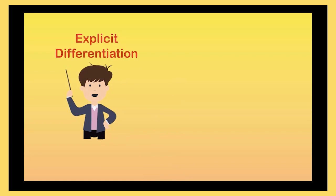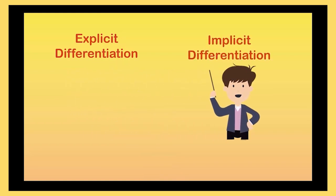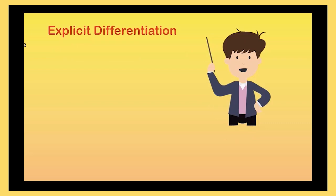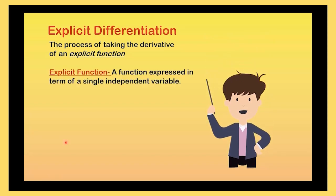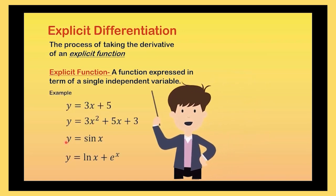Basically, you have two ways to differentiate a certain function. Number one is by explicit differentiation and by implicit differentiation. So what are the differences of those two? When you say explicit differentiation, that is the process of taking the derivative of an explicit function. And what is the explicit function? A function that is expressed in terms of a single independent variable.